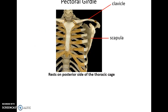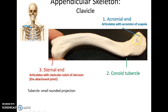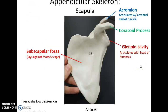The pectoral girdle consists of the clavicle, the collarbone, and the scapula, the shoulder blade. The clavicle, a sort of S-shaped bone, has a sternal end that articulates with the clavicular notch of the sternum, has a conoid tubercle going down posteriorly, and an acromial end that articulates with the acromion of the scapula.